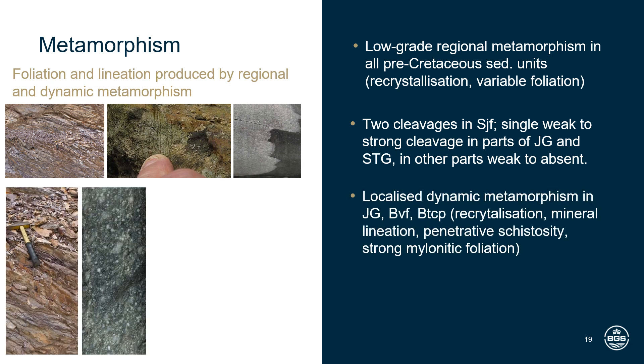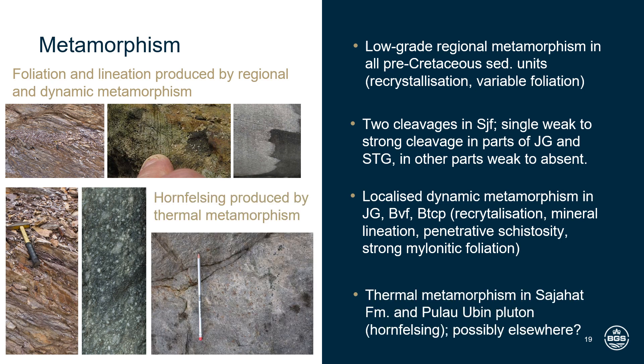Dynamic metamorphism has also occurred locally within high-strain zones, most notably within the Jurong group, Buena Vista formation and Choa Chu Kang Pluton. The effects range from quartz crystal recrystallisation and mineral lineation to penetrative anastomosing schistosity and metre-thick zones of strong mylonitic foliation. Thermal metamorphism has also been observed locally near intrusive igneous contacts — within the Sajahat formation this has produced conspicuous hornfels, largely effacing pre-existing foliation. Pulau Ubin Pluton rocks near the contact with the Pulau Sakijang Pluton also appear more massive and granular. Hornfelsing may also occur elsewhere in the subsurface if other as-yet unmapped Cretaceous plutons are present.